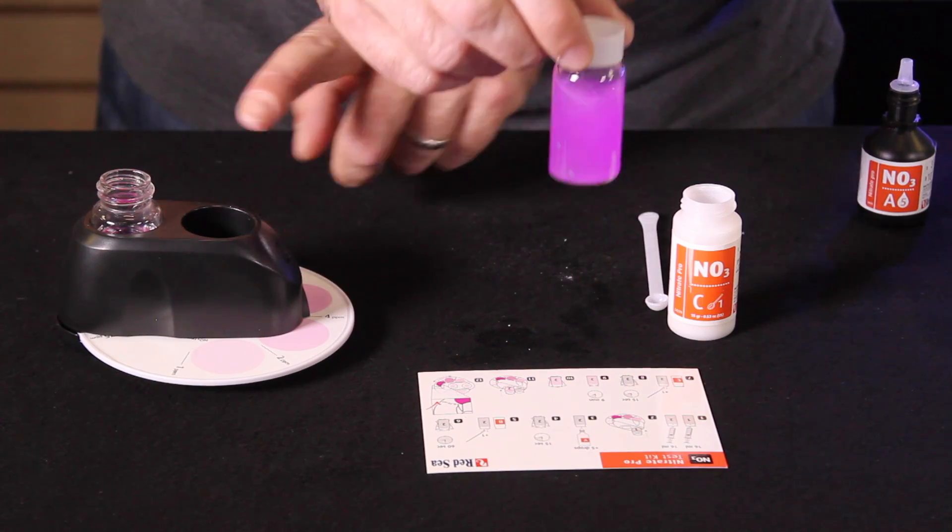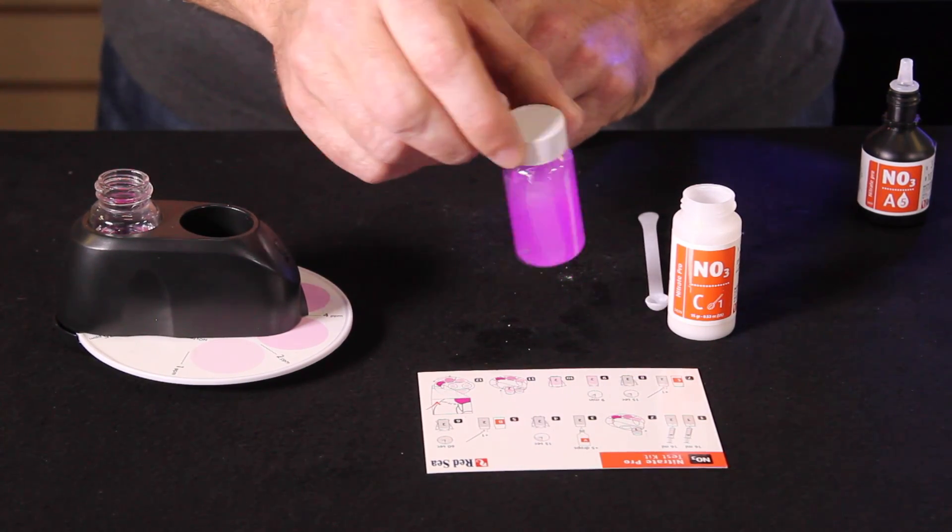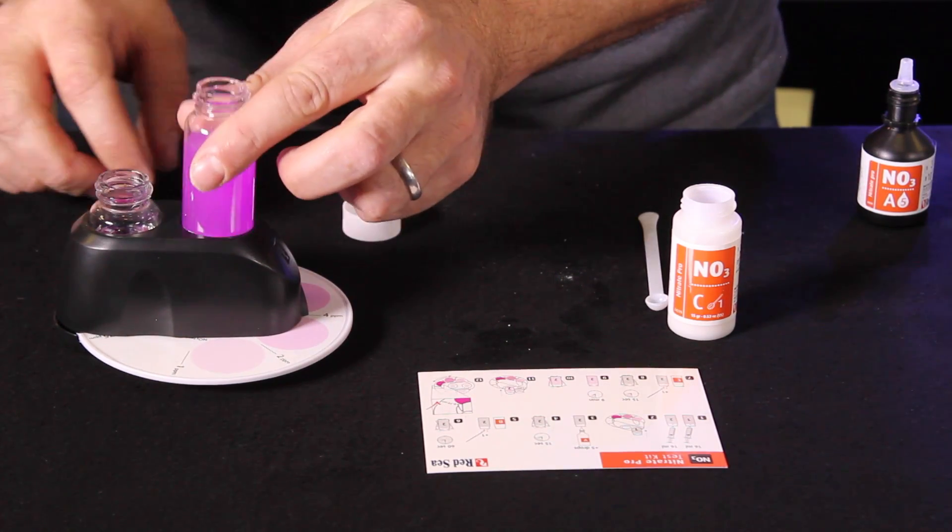And then we need to place this in the center chamber of our test vial. We're going to set a timer for nine minutes and then we're going to come back and compare our results.